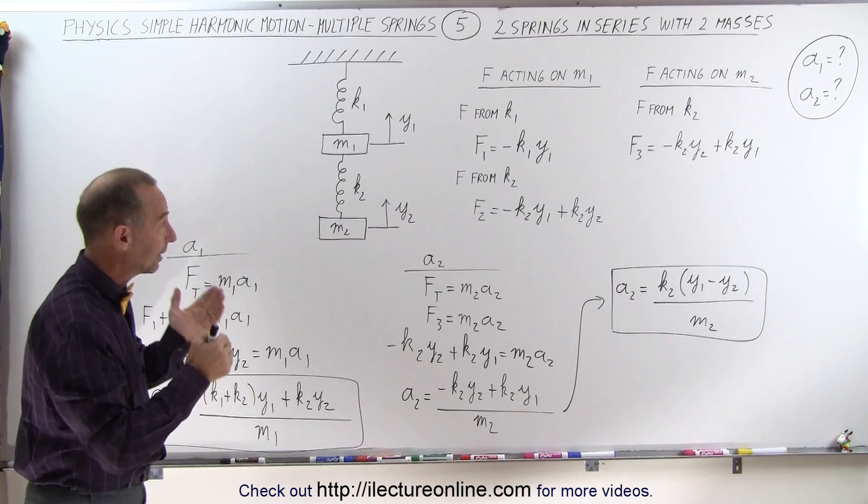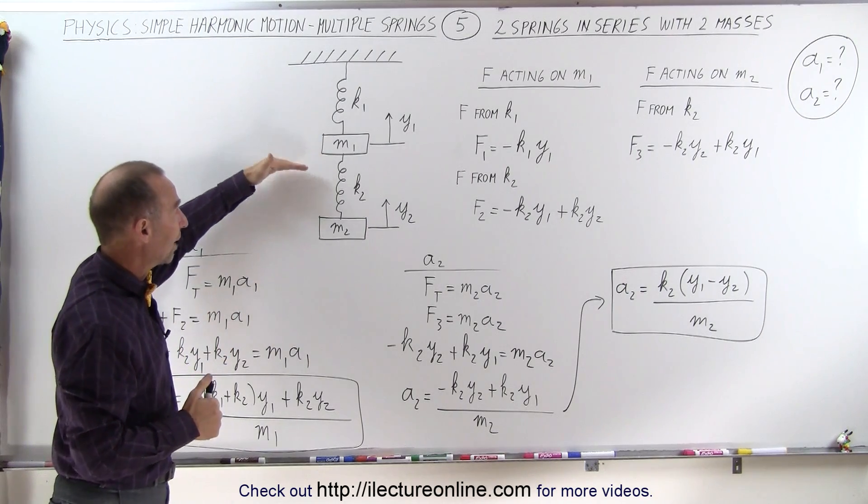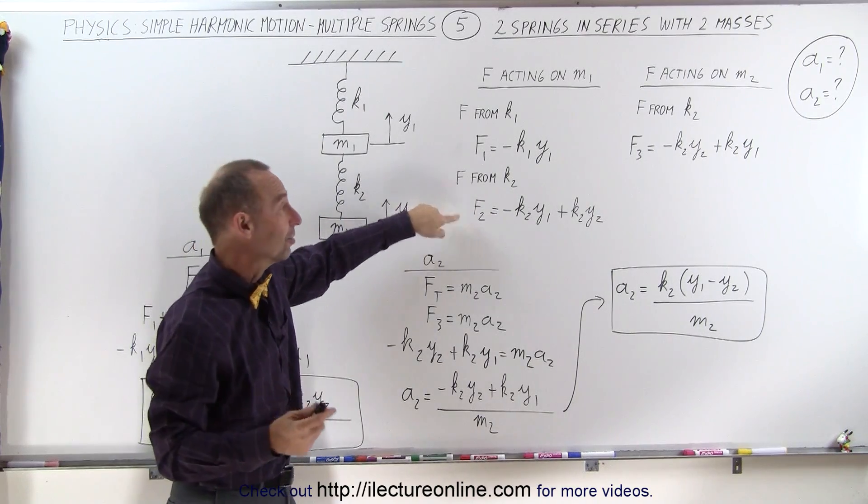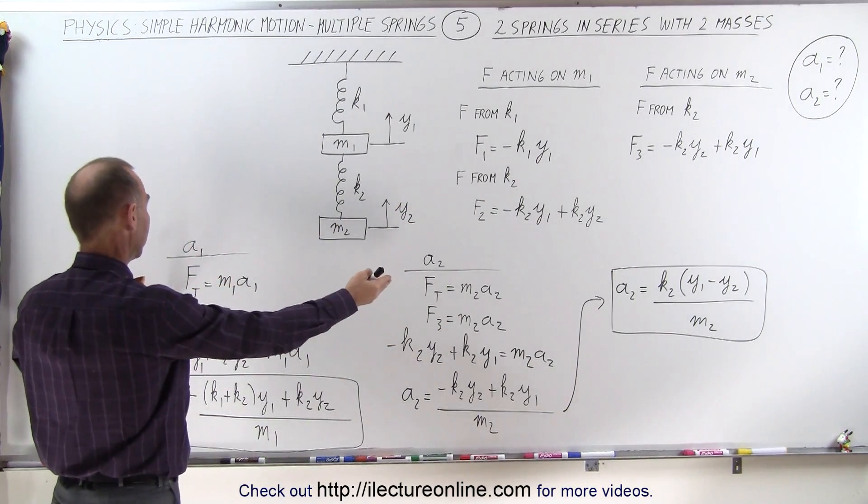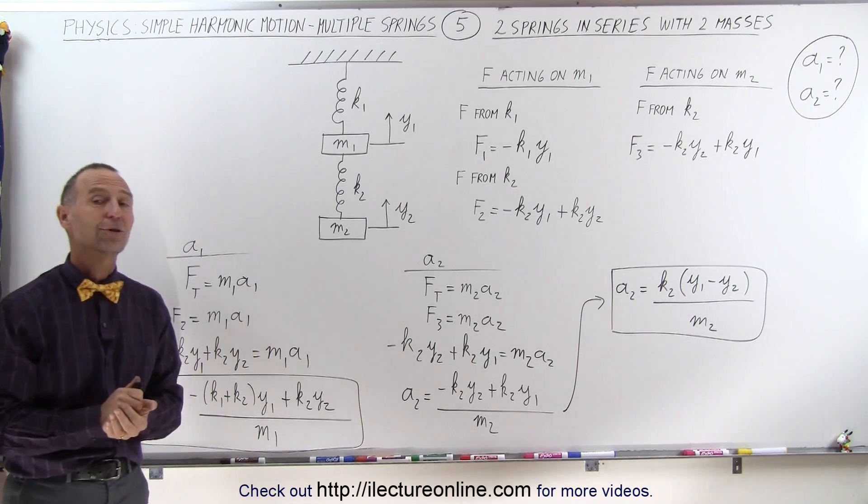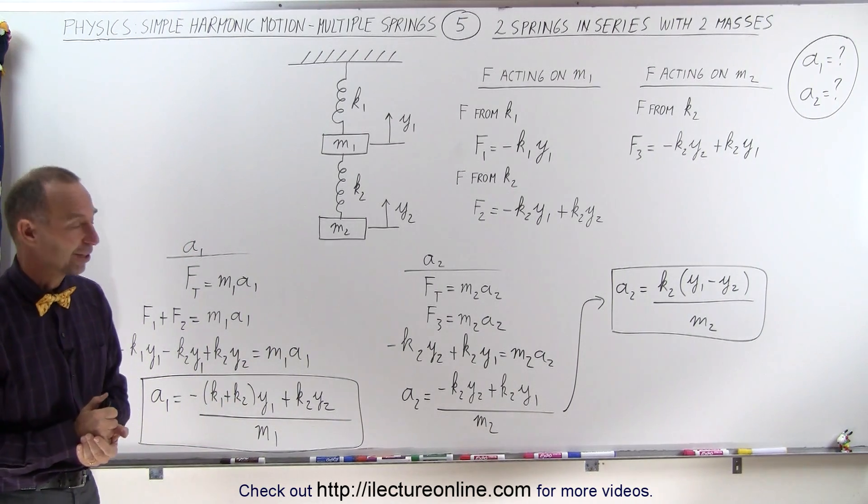But notice by keeping very careful track of how the two springs act on the two masses, the total force will be on each of the two masses. And then using Newton's second law, f equals ma, I can find acceleration on the two masses. And that's how it's done.